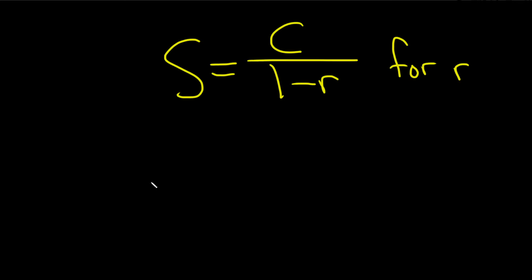We have a literal equation: s equals c over 1 minus r, and we're looking for little r. Little r is in the worst possible place — it's on the bottom, and it's got a negative sign in front of it.